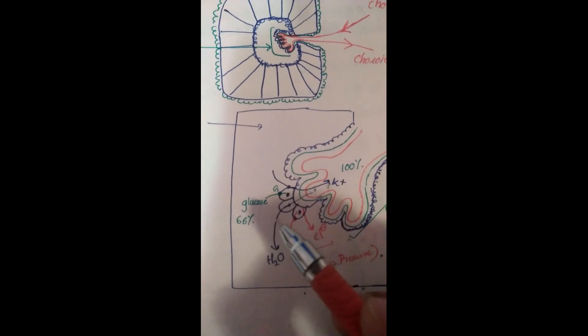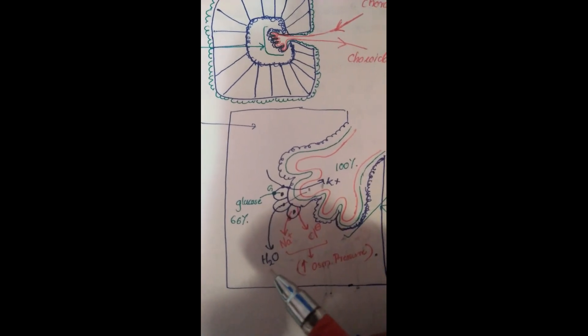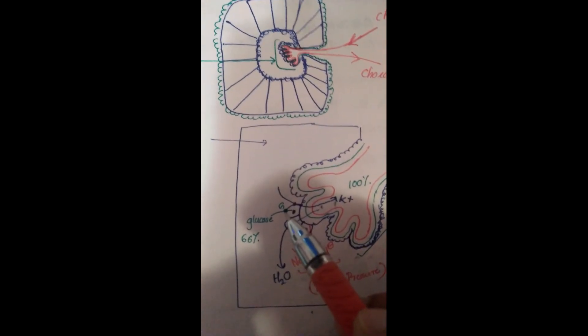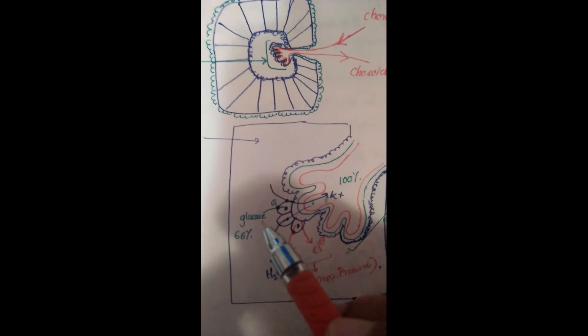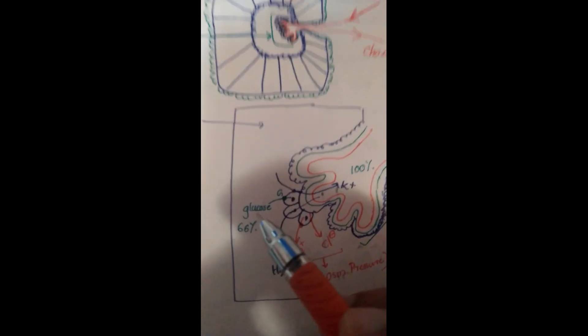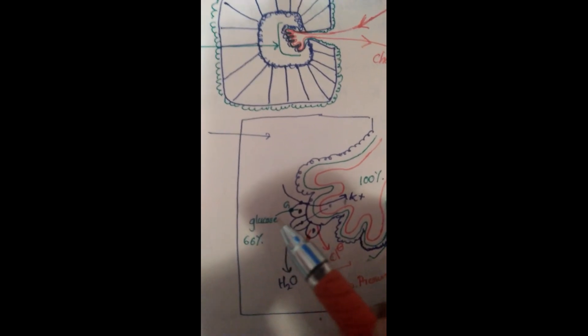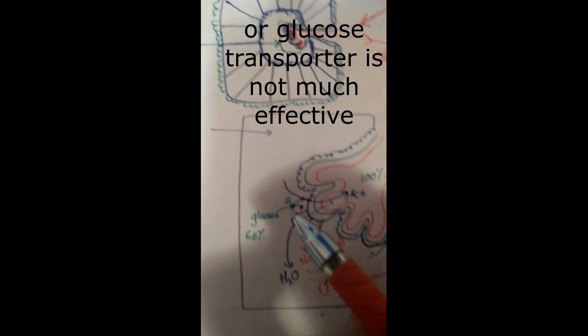The water flows from the blood to the CSF. Ependymal cells have another transporter for glucose. But we should understand that if the blood has 100% glucose, only 60% of glucose is present in the CSF because the transporter in the ependyma is not sufficient.